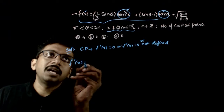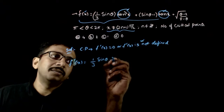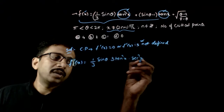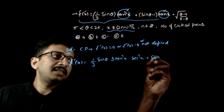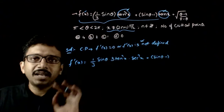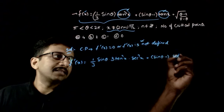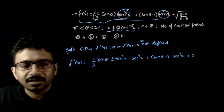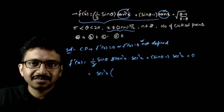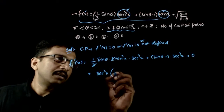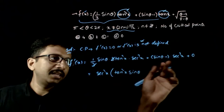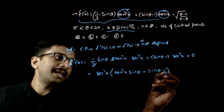Let us differentiate this. f'(x) equals (1/3)·sinθ · 3tan²x · sec²x plus (sinθ − 1) · sec²x. Note that theta is a constant with respect to x. After simplification, the 3s cancel, giving: sec²x · (tan²x · sinθ + sinθ − 1) = 0.